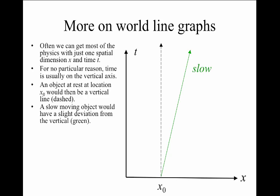A slow-moving object would start to move away from its original location along the x-axis, but it would do so slowly. In other words, it would take a lot of time along the vertical direction just to move a little bit of distance along the horizontal direction. So this green line right here might be the world line for a slow-moving object.